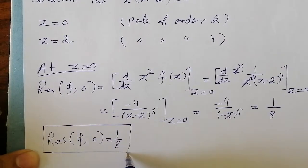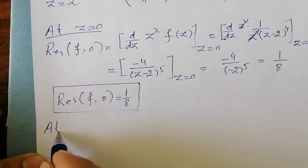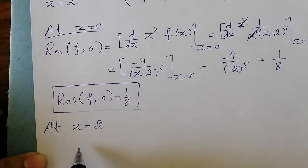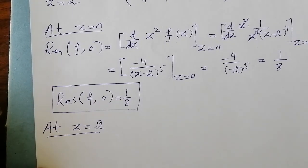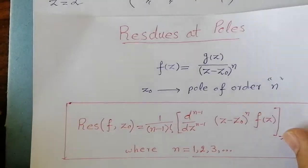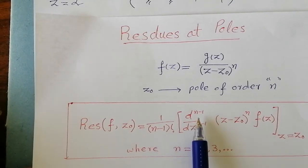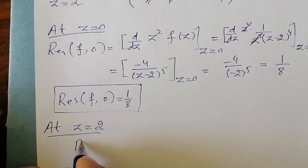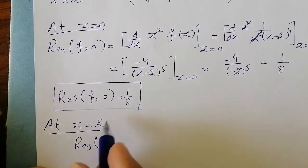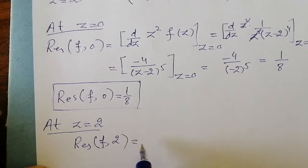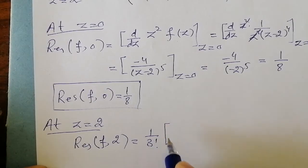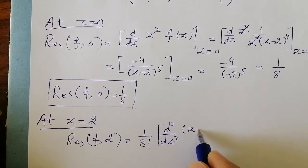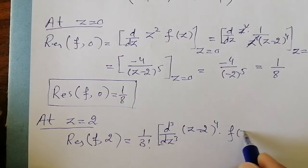This is the required solution for the first pole. Now I have to obtain the residue at the other pole z = 2, which is a pole of order 4. Putting n = 4 in the formula gives 1/3! = 1/6. So the residue of f at z = 2 equals (1/6) · d³/dz³ of [(z−2)⁴ · f(z)], evaluated at z = 2.